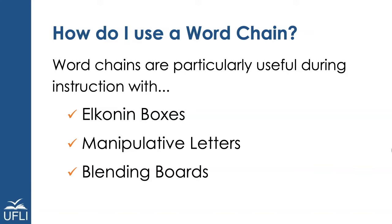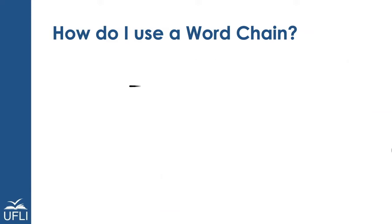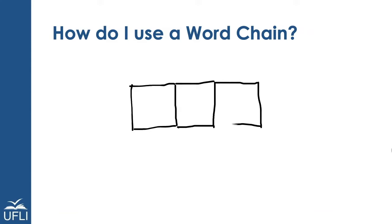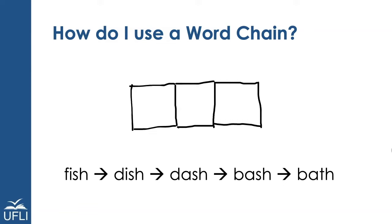Let's start with Elkonin boxes. To use an Elkonin box, first we'll draw one box for each sound you're working with. Then to use the word chain, you would ask the student to segment the sounds they heard in a word — such as fish: /f/, /ɪ/, /ʃ/ — and then enter the letter or letters for each sound in that word.